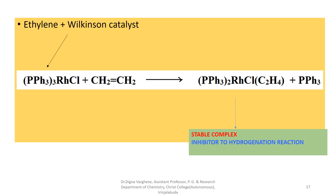Wilkinson catalyst is used for the hydrogenation of various alkenes, but it is not used for the hydrogenation of ethylene. When ethylene is used with Wilkinson catalyst, it forms a stable complex — (PPh3)2RhCl(C2H4) plus PPh3 — which is a stable complex that does not react further. So, ethylene acts as an inhibitor to the hydrogenation reaction, and therefore Wilkinson catalyst is not used for hydrogenating ethylene.